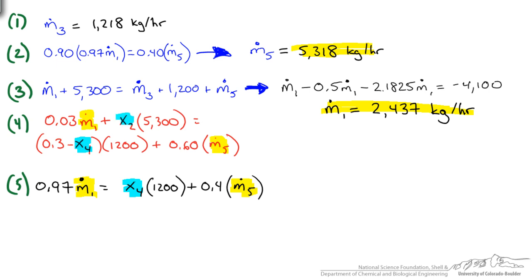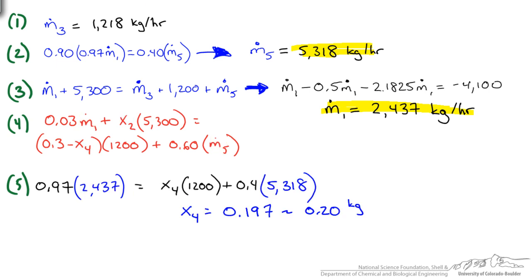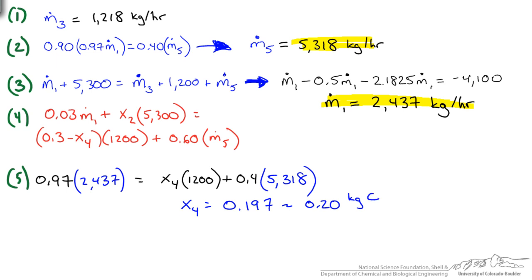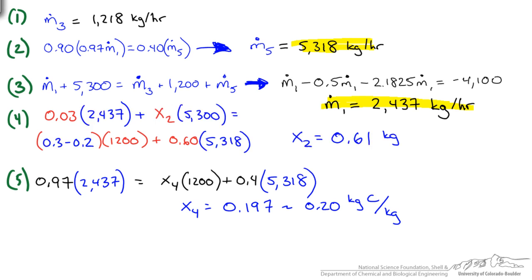So let's go ahead and put those results. So I have solved for x4 and remember that in our problem statement was for the C component. So it is kg C per kg of the stream. So then again we could use that in equation 4 to solve for our last unknown x2. Solved x2 as 0.61 kg of B per kg and again that was for the second stream.